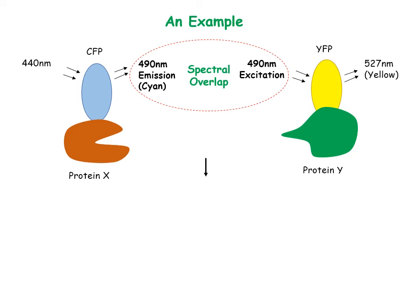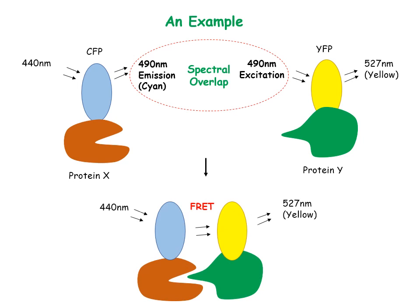If protein X and protein Y interact with one another, they come close enough so that FRET can occur, as seen by yellow fluorescence. If they do not interact, FRET will not occur and only cyan fluorescence is produced.